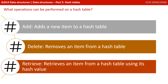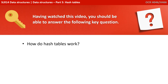You need to be able to understand three basic operations which can be performed on a hash table: adding a value, deleting a value, and retrieving a value. We look at these in more detail in our next video on hash tables. Having watched this video, you should be able to answer the following key question: how do hash tables work?